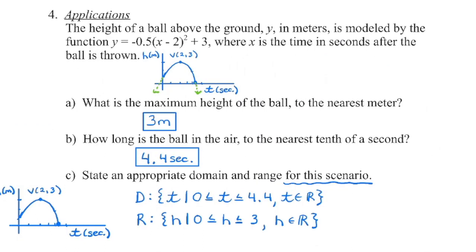Our final question is similar to one from the previous lesson, but now we're given a function in vertex form. We want to see what the x-axis and y-axis represent, and label them with appropriate units. We know the vertex is at 2, 3 — so we can plot that point directly without graphing. We know it opens down because the a value is negative. When asked for the maximum height, height is on the y-axis, which is the y-coordinate of the vertex — that's our maximum since we're opening down. So the maximum height is 3, with appropriate units.